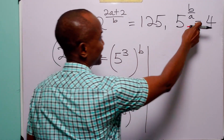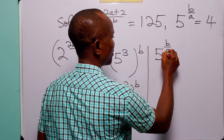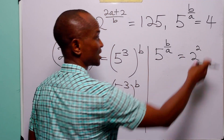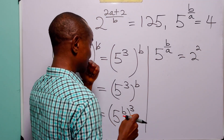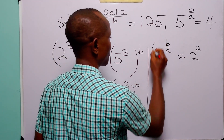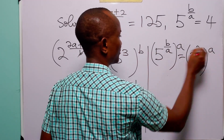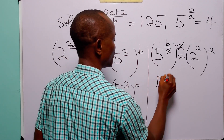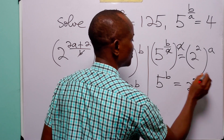Now let us go over to the second equation. We have 5 to the power B/A, and this is equal to 2 squared, because 4 equals 2 squared. To get rid of the fraction in the exponent, we raise both sides to the power A. This cancels the A, leaving us with 5 to the power B is equal to 2 to the power 2A.